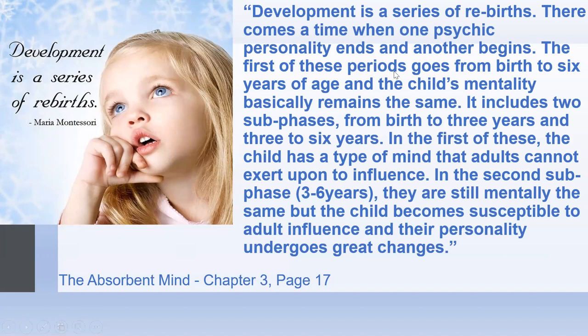This quote states: development is a series of rebirths — a time when one psychic personality ends and another begins. The first period goes from birth to six years of age and includes two sub-phases: birth to three, and three to six. In the first sub-phase, the child has a type of mind that adults cannot influence. In the second sub-phase, three to six, they are still mentally the same but the child becomes susceptible to adult influence and their personality undergoes great changes. This is taken from The Absorbent Mind.